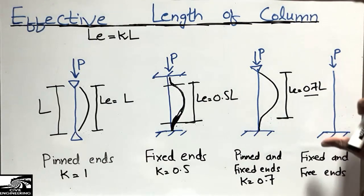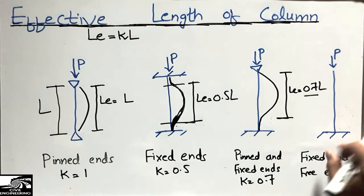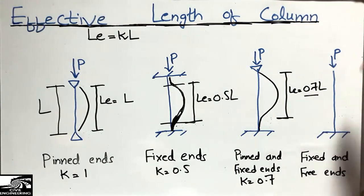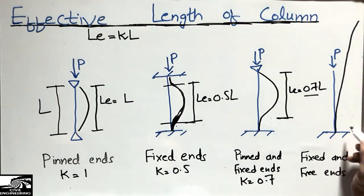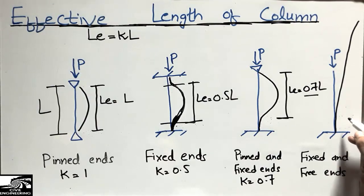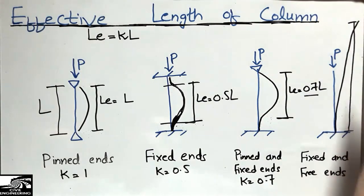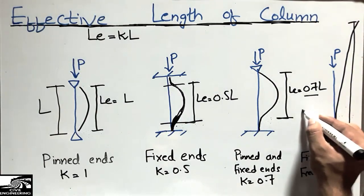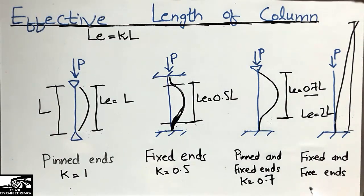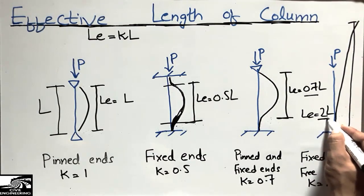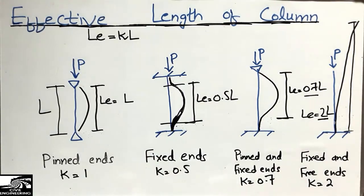The last case is like a cantilever — one end of the column is fixed and the other end is free. The free end will deflect significantly. The effective length in this case is 2L, which is twice the original length, so the K value equals 2.